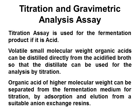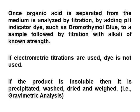Titration and gravimetric analysis assay: Titration assay is used for fermentation products that are acid-volatile, small molecular weight organic acids distilled directly from the acidified broth. This distillate is then used for analysis by titration. Organic acids of higher molecular weight are separated from the fermentation medium by adsorption and elution from a suitable anion exchange resin. Once separated, the organic acid is analyzed by titration using a pH-indicator dye such as bromothymol blue, followed by titration with alkali of known strength. If electrometric titrations are used, the dye is not used. If the product is insoluble, it is precipitated, washed, dried, and weighed — that is gravimetric analysis.